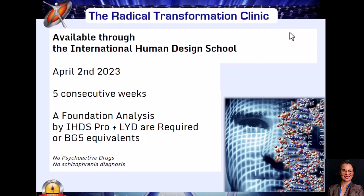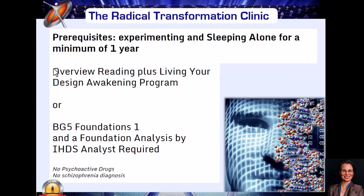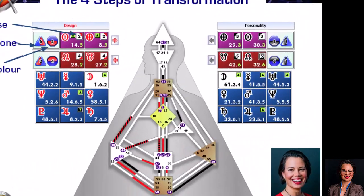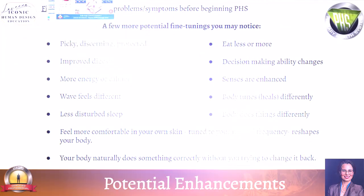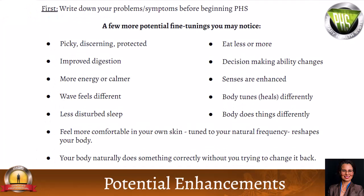The radical transformations clinic is going to start in April, April 2nd at the IHGS school. The four transformations plus a bonus Q&A, so five consecutive weeks in April. Your requirement is a foundation analysis or the BG5 equivalent, including LYD. Right now, we're going to shift gears and go into a little bit about what to expect as you start off on this journey. And I'll give you a homework assignment if you're going to continue with us.